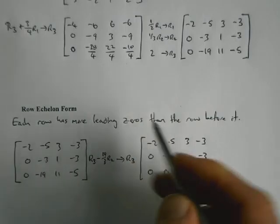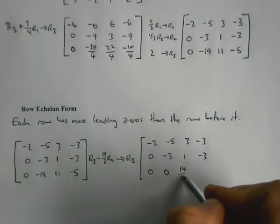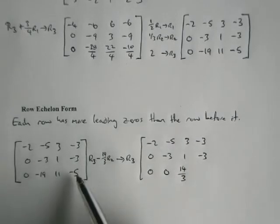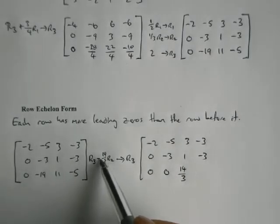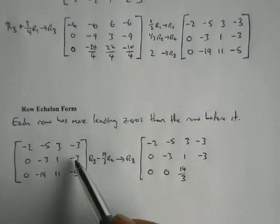All right, as you may have guessed, this isn't just being done randomly, there's a process, there's something we're heading towards, and the fact that I've managed to get zeros at the front of these two is actually significant, but we're not quite where we want to head.